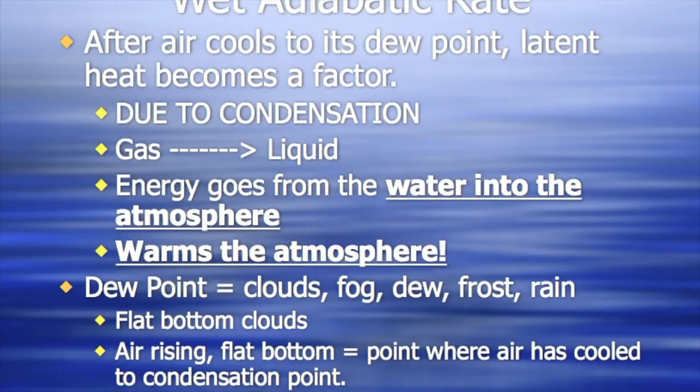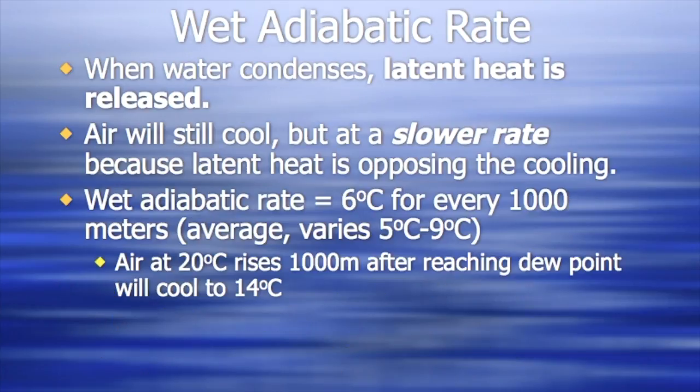Energy goes from the water into the atmosphere and warms the atmosphere just a little bit. And we already know that when condensation happens, we're going to get things like clouds and fog and dew and frost and rain. And we've already talked about why clouds have flat bottoms. But when that water condenses and that latent heat is released, what happens is that warms the air just a smidge. The air is still going to cool, but it's not going to cool quite as fast.